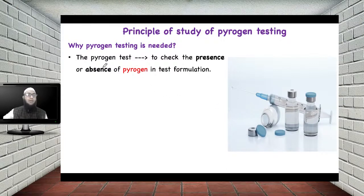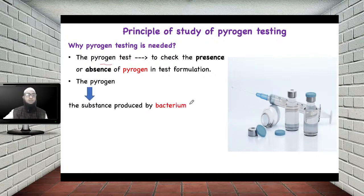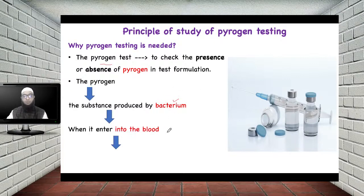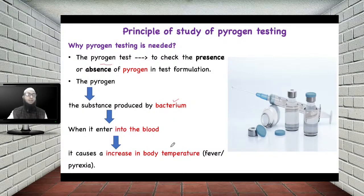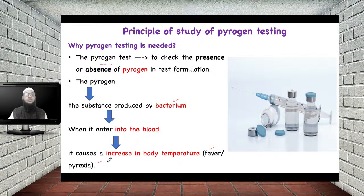Now, what do we mean by pyrogen? Pyrogen is nothing but a substance produced by bacteria. When it enters the blood circulation, it causes an increase in body temperature. This increase in body temperature is called fever, or in other words, pyrexia. Since pyrogen is a substance from bacteria that, when it enters the blood, produces pyrexia — that is, increase in body temperature — this substance is called pyrogen.